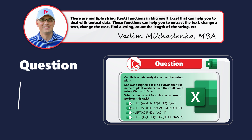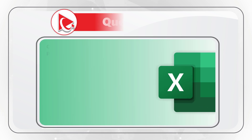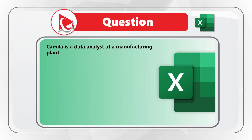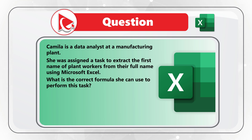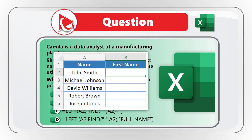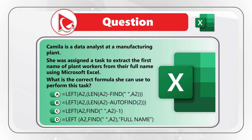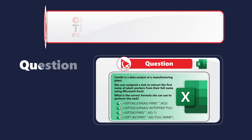Here's a very interesting question to understand how well you know formulas and functions for working with textual strings in Excel. Camila is a data analyst at a manufacturing plant. She was assigned a task to extract the first name of a plant worker from their full names using Microsoft Excel. What is the correct formula she can use to perform this task? There are four different choices — A, B, C, and D — along with a data snippet where column A contains full names and column B has an empty first name column.